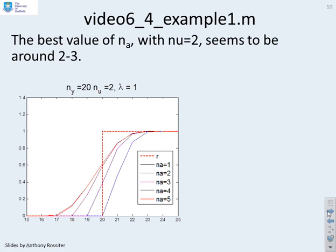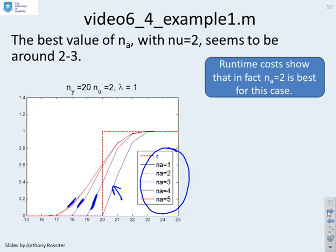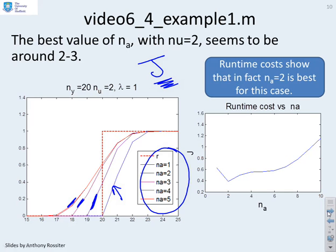First example. I've plotted the responses that you get for different choices of NA. So you can see where the trade-off is. You can see NA equals 1, which is this one here. Perhaps that's not particularly good. I can do a bit more if I anticipate the setpoint change. But how much do I want to anticipate? Do I want to choose NA equals 2 or 3 or 4 or 5? If you calculate the runtime costs, the corresponding value of J, you will find you get a plot a bit like this, and the minimum is here at NA equals 2.